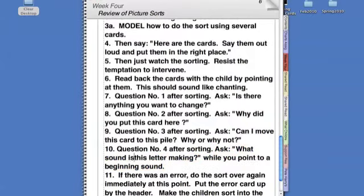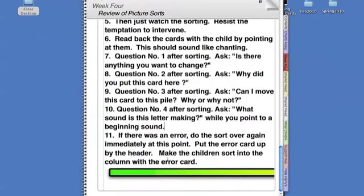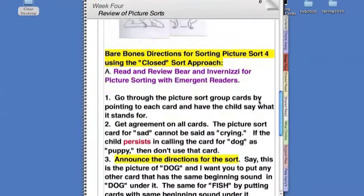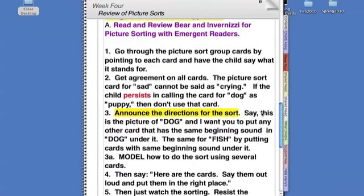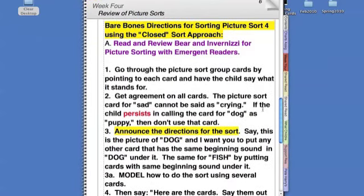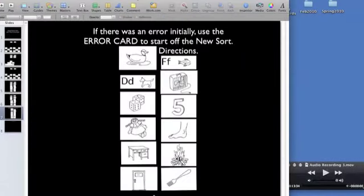For your next sort, if there was an error, do the sort again immediately at that point. Put the error card up there at the top and remove one of the other header cards, then group the words together. Model how to do the sort, give the cards to the child and tell them to say the word out loud and put it in the right pile. When you use picture sorts this way, children will clarify their difficulties that they're having understanding the sound patterns of English.